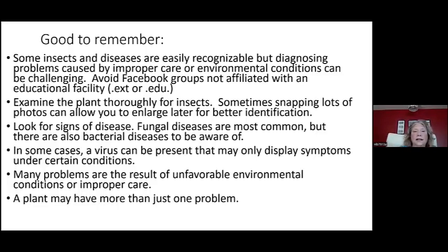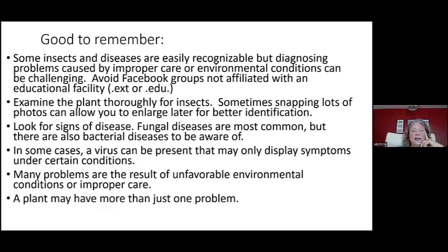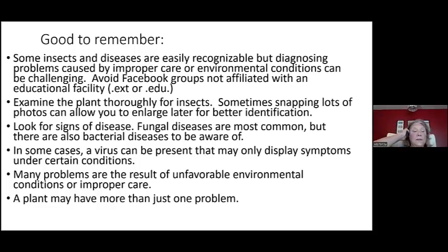Examine the plant thoroughly for insects and diseases. Snapping a lot of photos can help you enlarge them later to see better, and maybe use iNaturalist to identify what the plant or insect is. Fungal diseases are the most common thing we see — we live in Northern Virginia, and it's like a sauna most days in the summer. July and August are grueling. But there are also some bacterial diseases to be aware of, and in some cases a virus can be present, which has a totally different control than a fungal, insect, or bacterial problem.